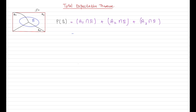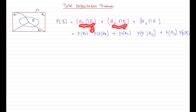We can write this as: under scenario A1, given A1 has occurred, what's the probability of B given A1, plus under scenario A2, given A2 has occurred, what's the probability of B given A2, and similarly for A3. This is the total probability theorem.